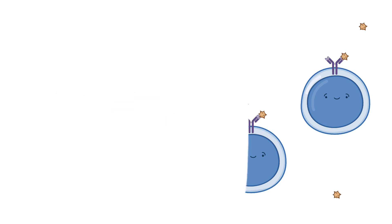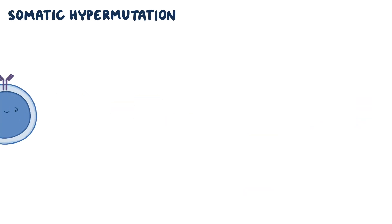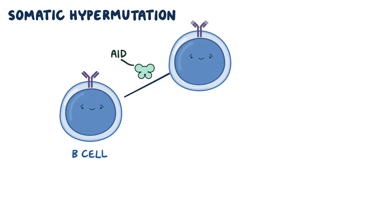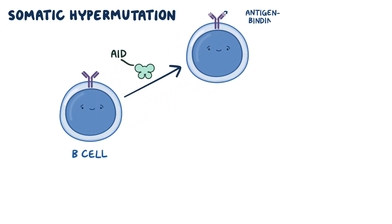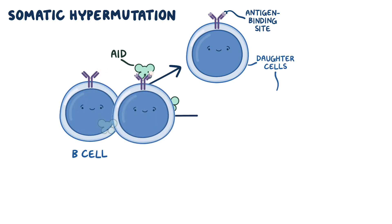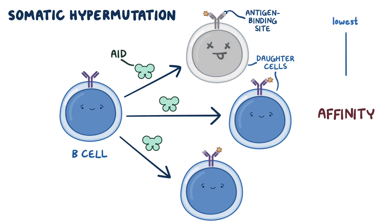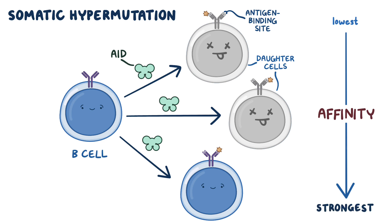As a quick recap: somatic hypermutation only occurs in B cells which express the enzyme AID. AID makes small mutations directly in the antigen binding site of the BCR, which get expressed in the daughter cells of a rapidly proliferating B cell. These changes in the variable region alter the affinity, or strength, that the BCR has for its antigen. As antigen becomes limited, B cells with the lowest affinity die off first, leaving only those with the strongest affinity for the antigen. This process is called affinity maturation.